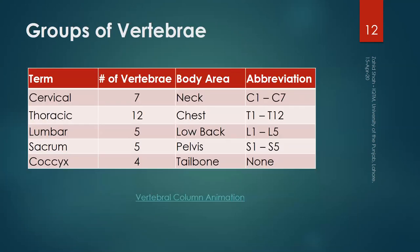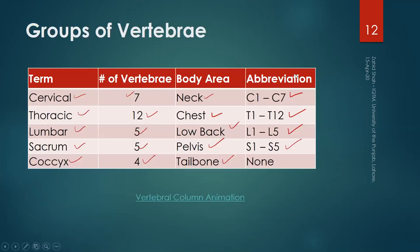To summarize the designations: seven cervical vertebrae form the neck, C1 to C7. Twelve thoracic vertebrae are attached to the back of the chest, T1 to T12. Five lumbar vertebrae form the lower back, L1 to L5. Five sacral bones are attached to the pelvis, S1 to S5. The coccyx consists of four fused bones, also called the tailbone, with no individual designations. The overall structure of the backbone is now clear, and we will continue with more details.